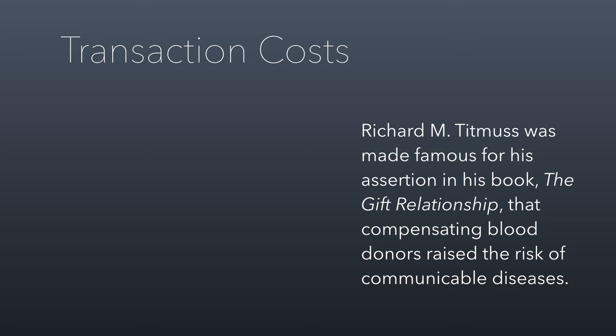Altruism can actually reduce transaction costs. Richard Titmuss, an economist, wrote a great book called The Gift Relationship. He did some cool research about blood donations back in the 70s in the UK and the United States. What was different back then is that if you were a blood donor in the UK, it worked like it does now in the US — you just do it out of the goodness of your heart. You might get a cookie or a t-shirt, but generally speaking, you're not being paid to donate blood.